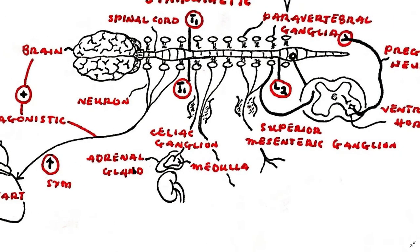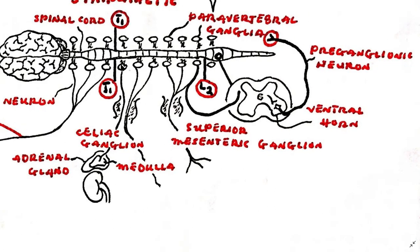Sympathetic preganglionic neurons originate in the lateral horn of the segments T1 to L2 of the spinal cord and exit the cord via the ventral horn on their way to the paravertebral or pre-vertebral ganglia.